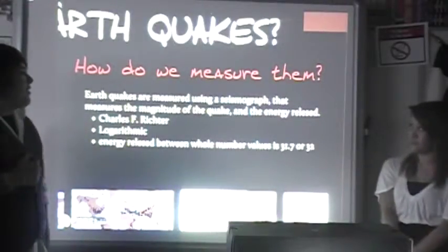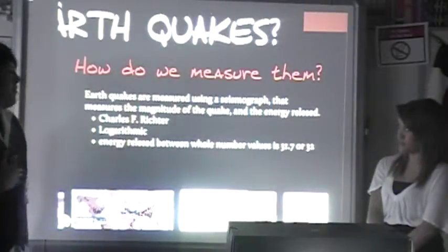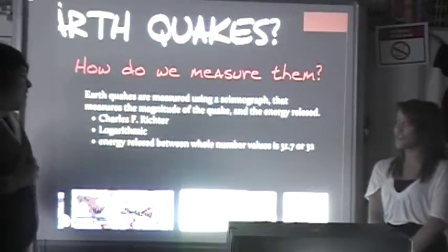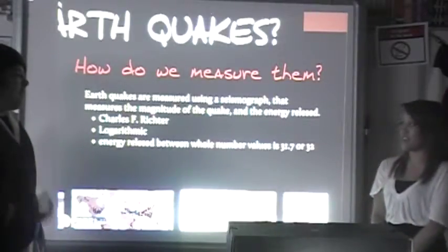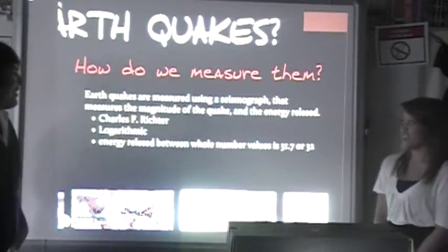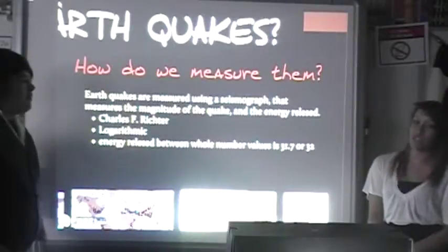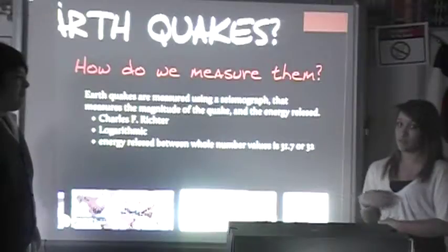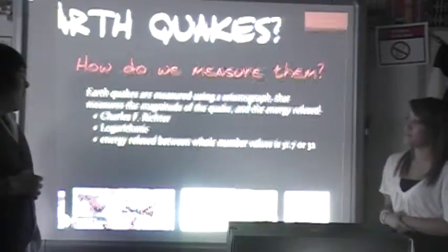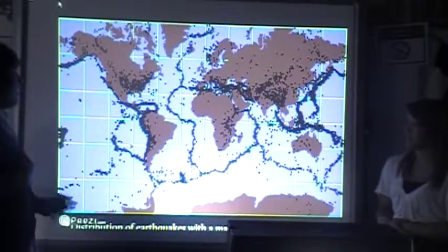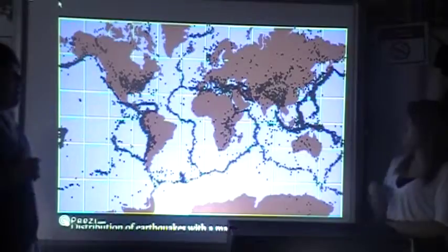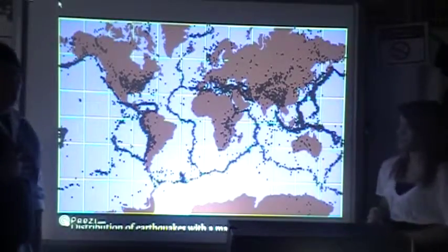How do we measure earthquakes? We measure earthquakes by using a seismograph that measures the magnitude of the earthquake and the energy. The seismograph — Charles F. Richter created it; he went to the University of California. The seismograph is a machine that tells when an earthquake is about to happen, which you can see as little splines or squiggles. This chart shows the distribution of earthquakes with a magnitude less than 5 on the Richter scale. Over there in Japan, it's completely covered in dots, which means they have a lot of earthquake activity.